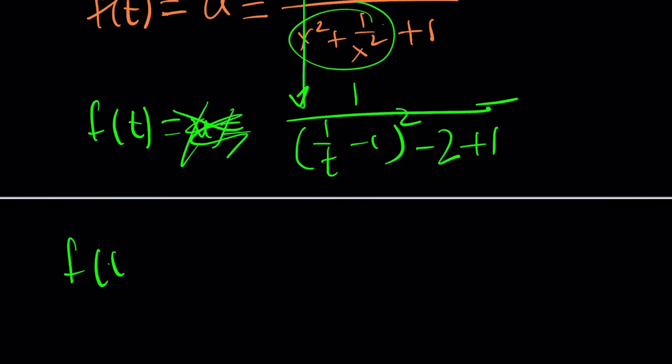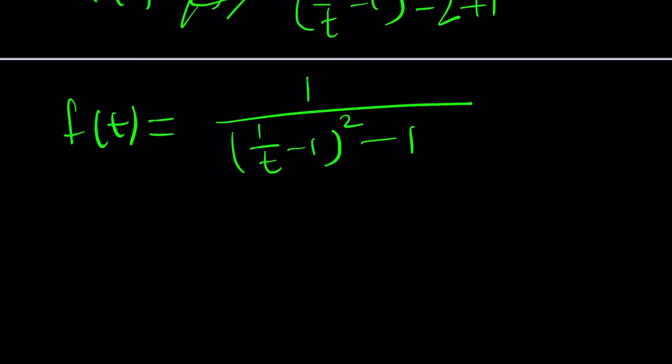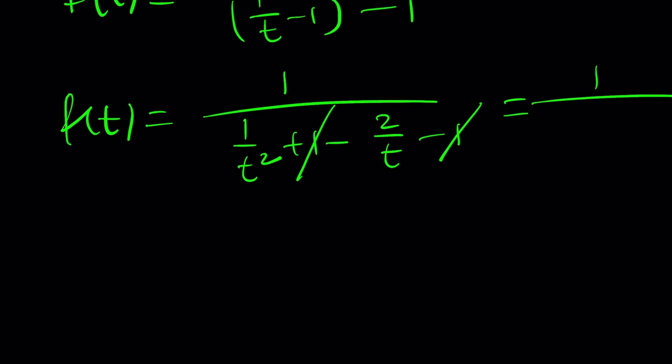What is f of t? f of t is equal to 1 over 1 over t minus 1 squared minus 1. Now, do you want to simplify this a little bit more? Yeah, because 1 cancels out. This gives us 1 over t squared plus 1 minus 2 over t minus 1. These two cancel out. And if you make a common denominator, you're going to get 1 minus 2t over t squared. And if you flip, f of t can be written as t squared divided by 1 minus 2t.